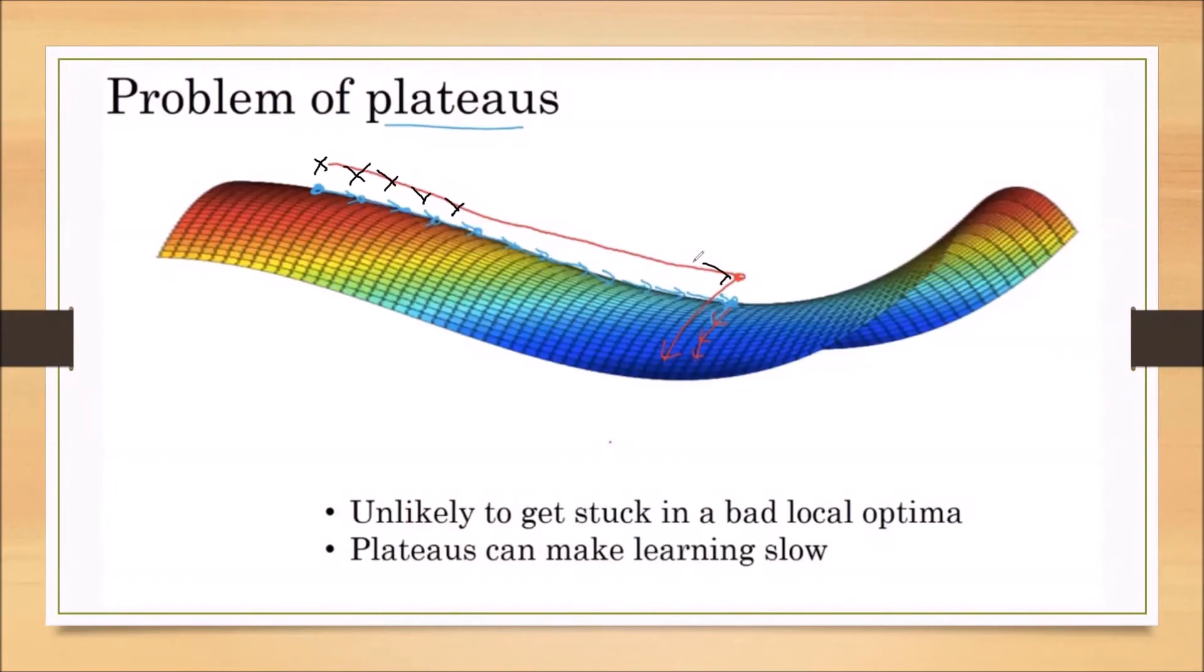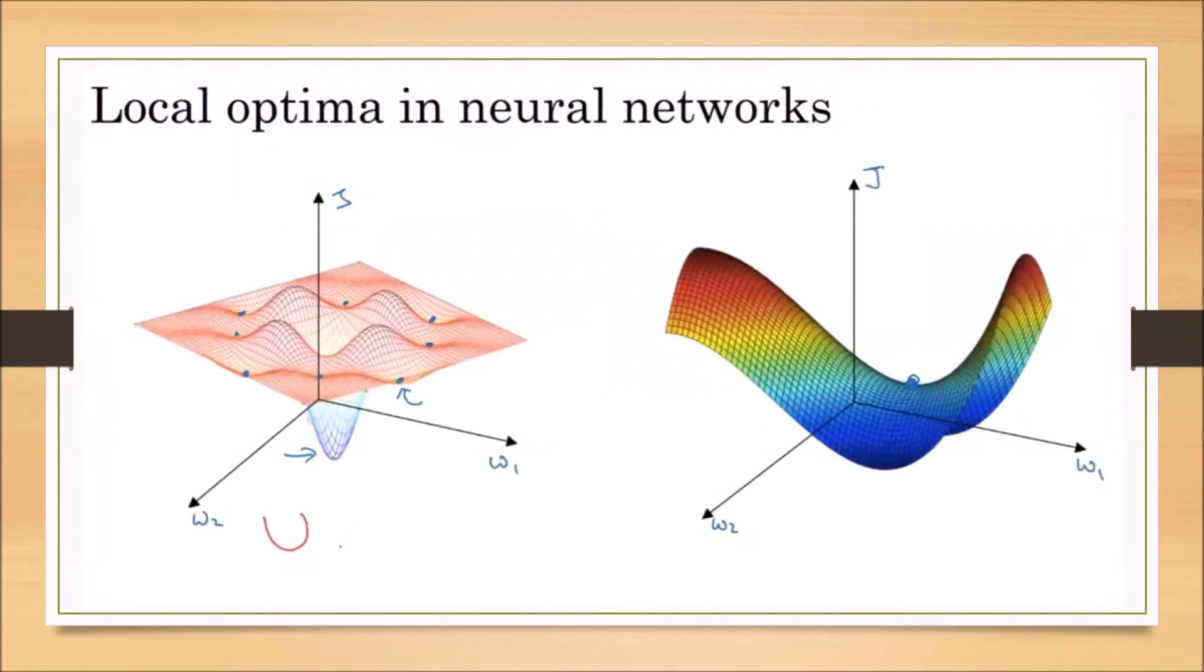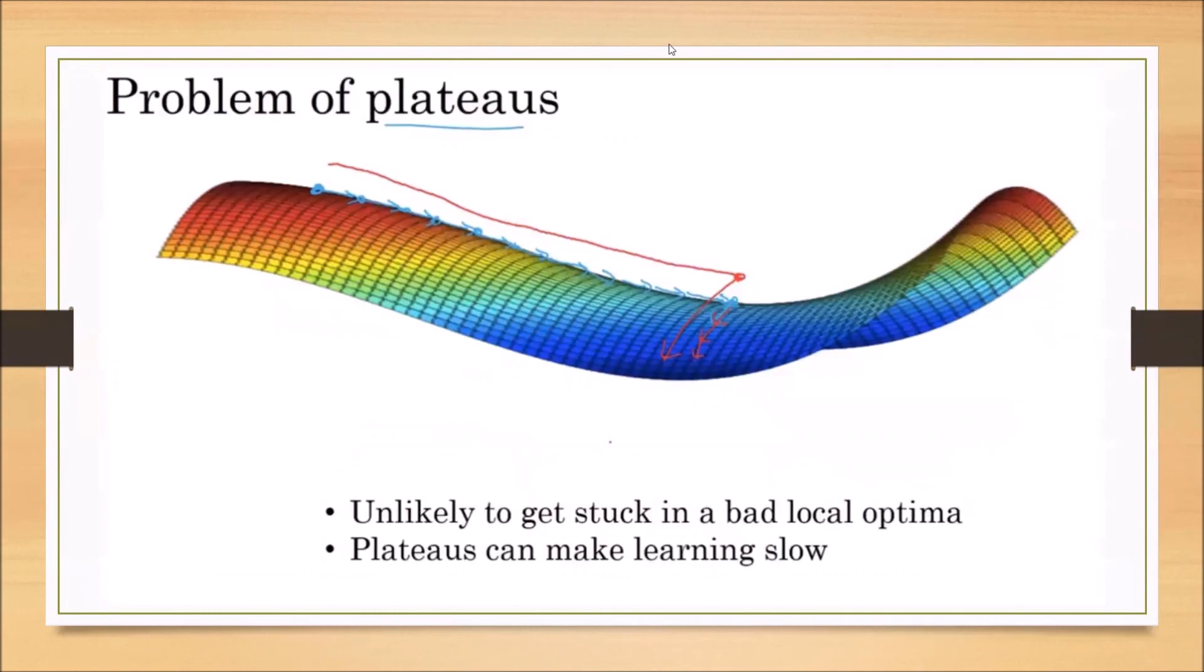propagation or Adam optimization algorithm to progress faster with fewer iterations. We call this point a saddle point. The problem is that plateaus can make learning